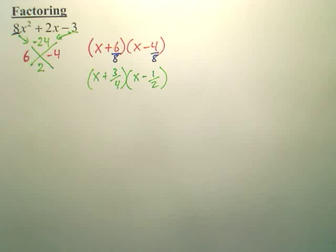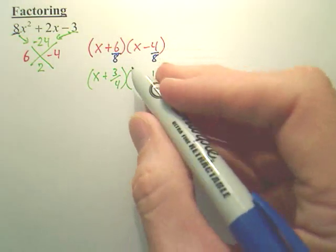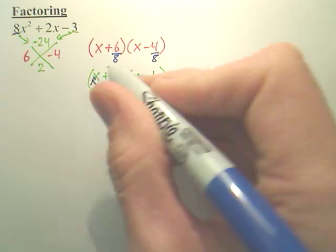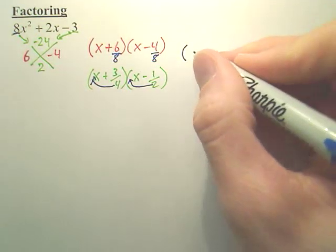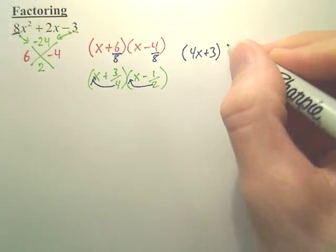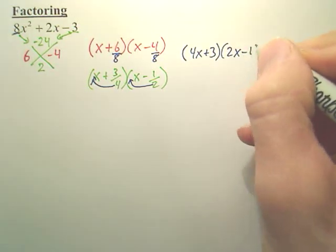So your answer, well, your answer just isn't technically fractions. So what you do is you take these bottom pieces and move them up. So your final answer is 4x plus 3 and 2x minus 1.